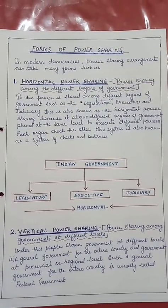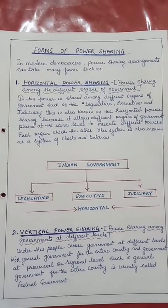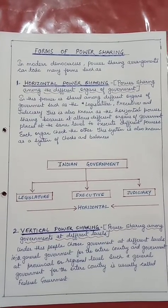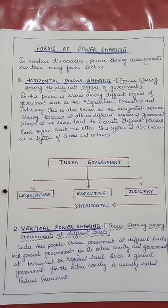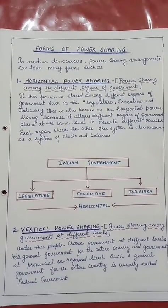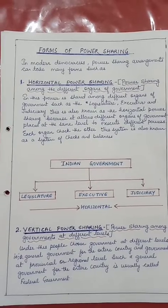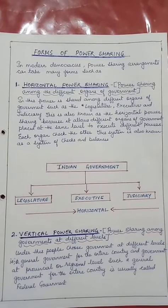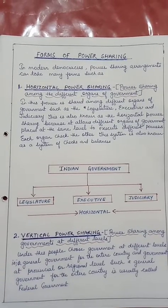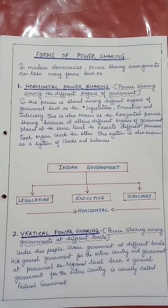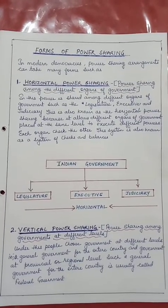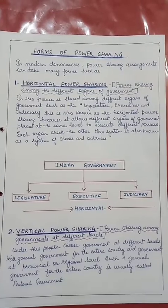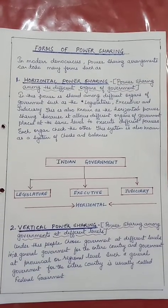Forms of power sharing. In modern democracies, power sharing arrangements can take many forms. The first one is horizontal power sharing, i.e. power sharing among the different organs of government. In this, power is shared among different organs of government such as legislature, executive, and judiciary. This is called horizontal power sharing because it allows different organs of government placed at the same level to execute different powers. Each organ checks the work of others, and this system is known as the system of checks and balances.